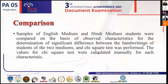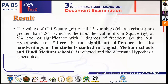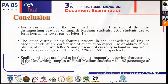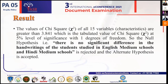To compare and find whether there is any difference, the chi-square test was performed and calculated manually for each characteristic. The chi-square values for all 15 characteristics were found to be greater than 3.841, which is the tabulated critical value used to determine whether there is any significant difference in the selected data. As a result, the null hypothesis was rejected and the alternative hypothesis was accepted, meaning there is a significant difference between the handwriting of English medium and Hindi medium students.